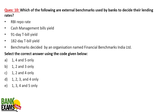Which of the following are external benchmarks used by banks to decide their lending rates? The approved external benchmarks are: the RBI repo rate, 91-day T-bill yield, 182-day T-bill yield, and benchmarks decided by an organization named FBIL — Financial Benchmarks India Limited. Cash management bills yield is NOT used as an external benchmark. So excluding the second option, all the remaining ones are valid external benchmarks.